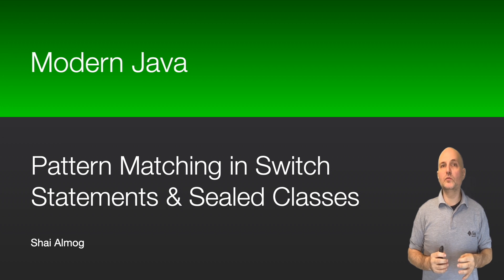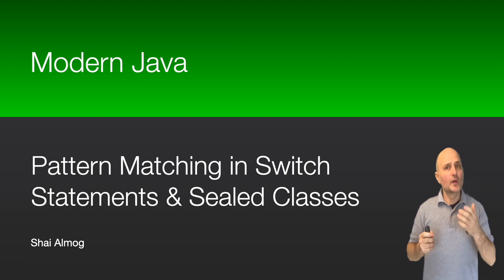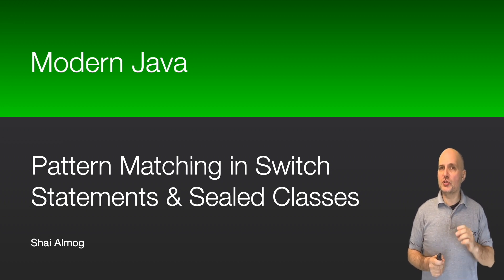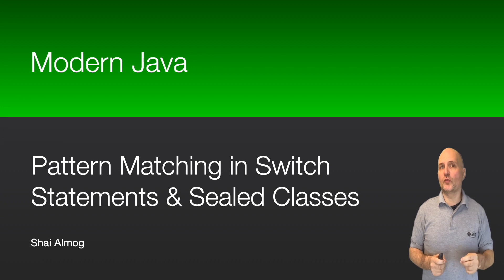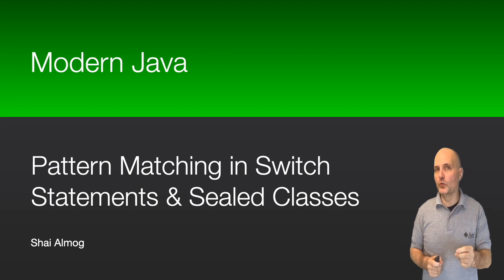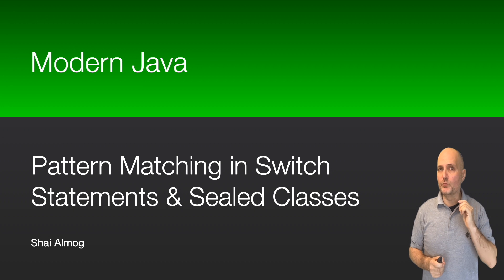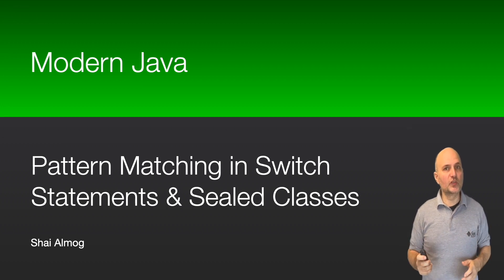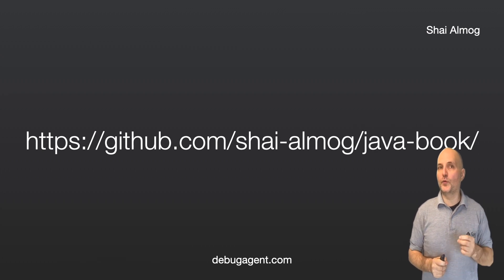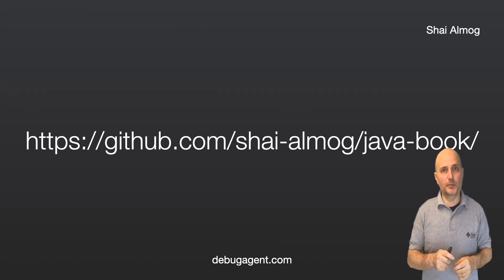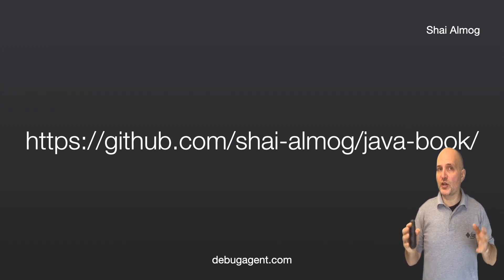Hello everyone and welcome to the modern Java course. In this video we'll discuss a set of language features that make Java just a little bit less verbose. We'll see the flaws of the old switch statement and how the new improvements in Java can improve the reliability of your code while reducing boilerplate. The code for this and the other videos in this series is available in my GitHub page, so check out this project, star it, and follow me on GitHub.